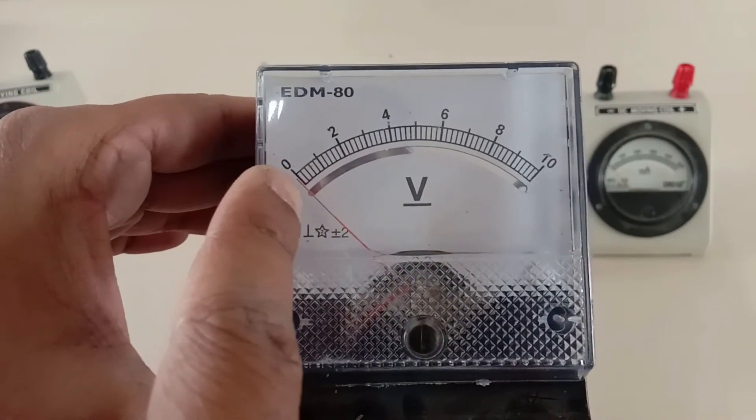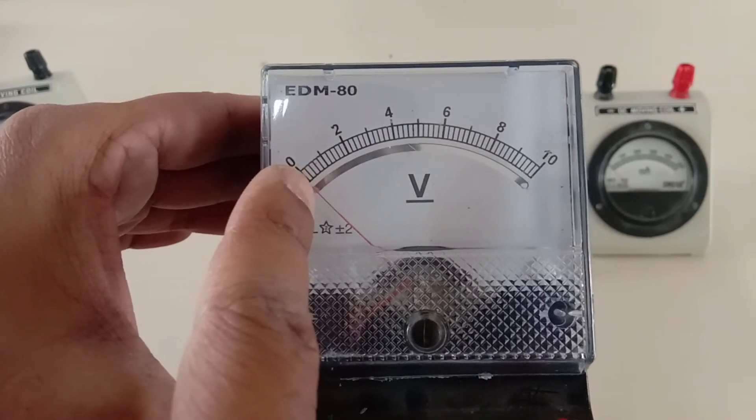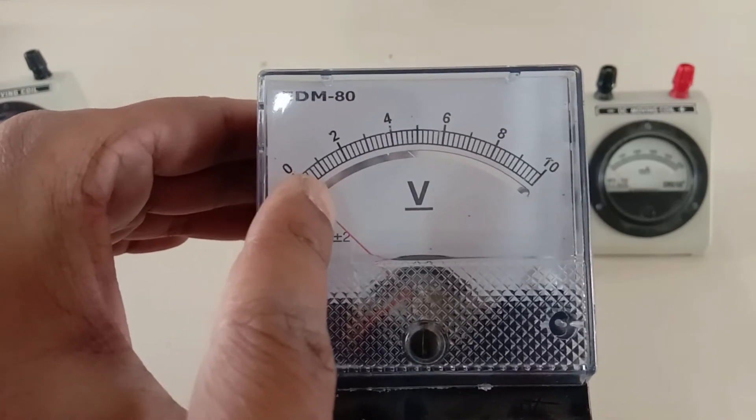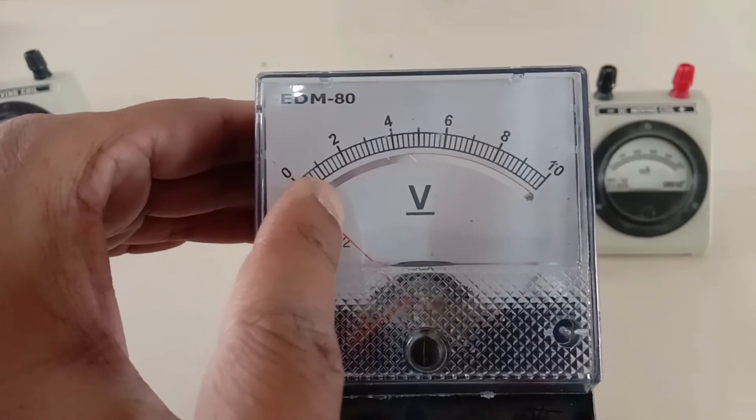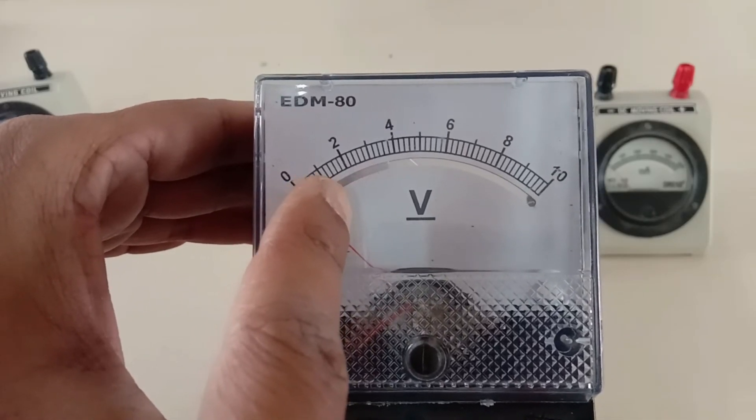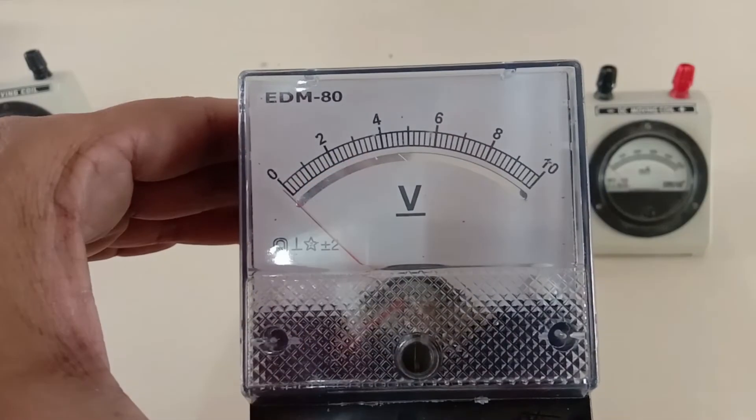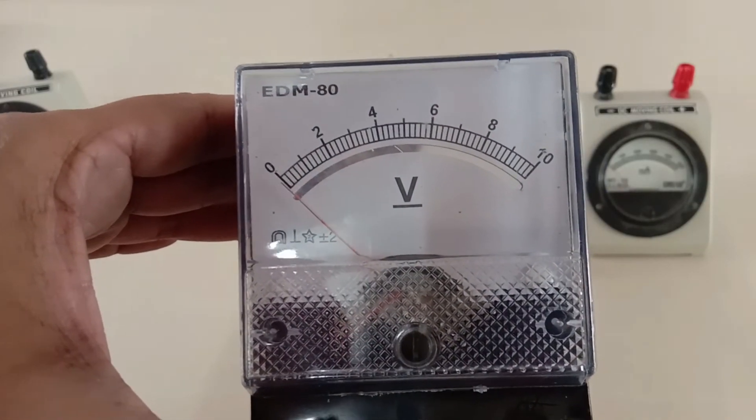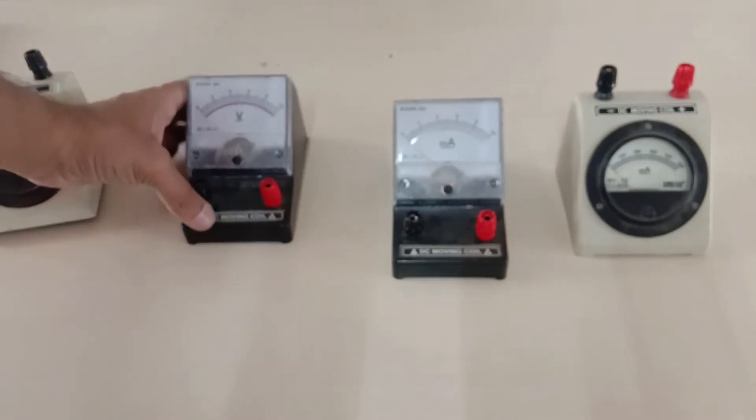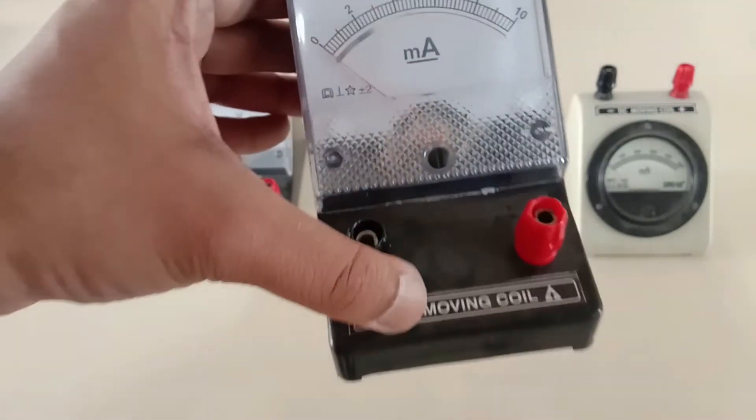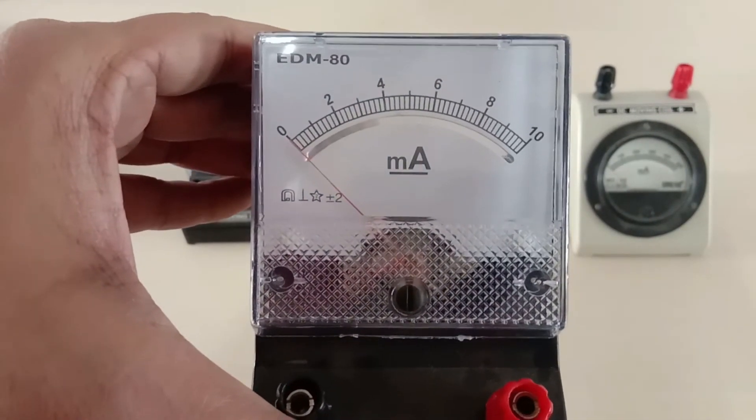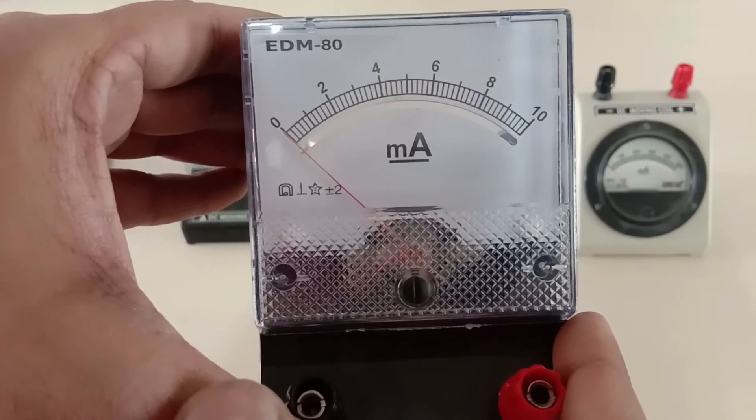So 0.2, 0.4, 0.6, 0.8, and then the largest division between 0 and 2 corresponds to 1 volt, and then again 1.2, 1.4, 1.6, 1.8, and 2 volts.